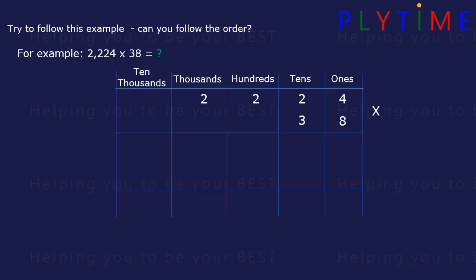Start with the ones. 4 times 8. Then 8 times 2. Then 8 times 2 again. Don't forget the carried over. Then 8 times 2 again. Don't forget the carried over numbers.